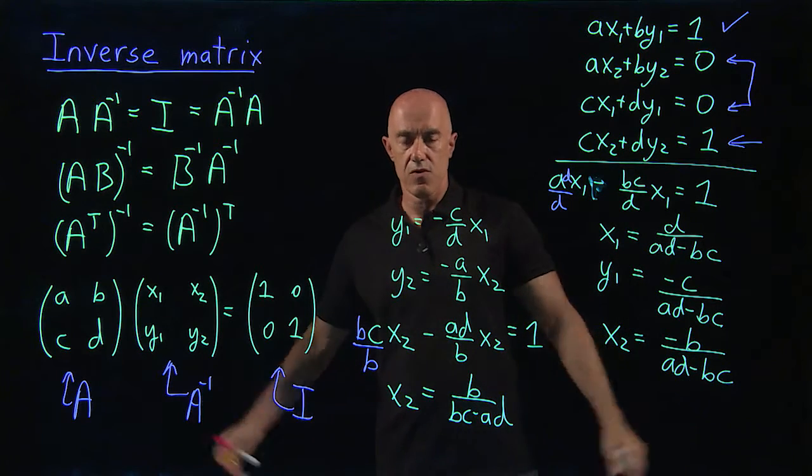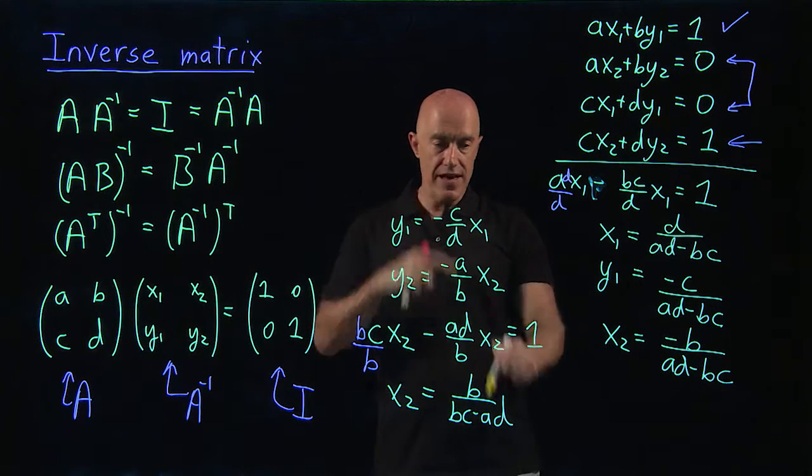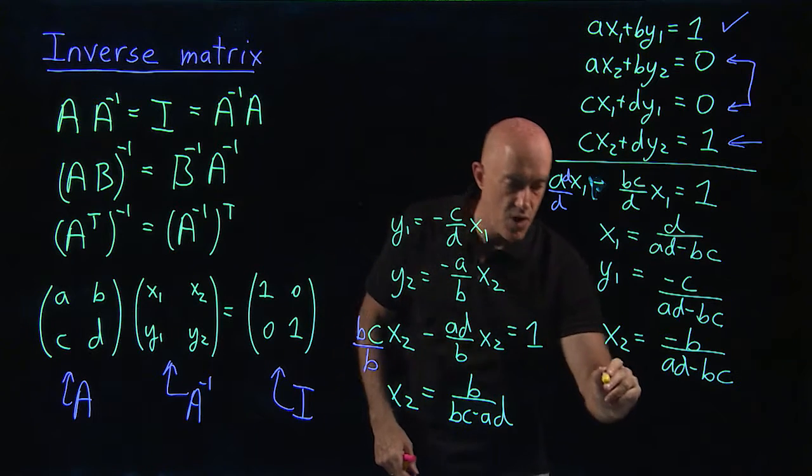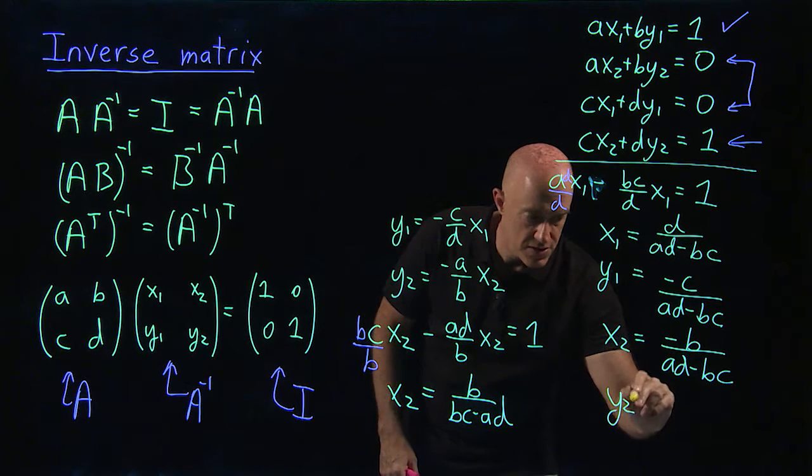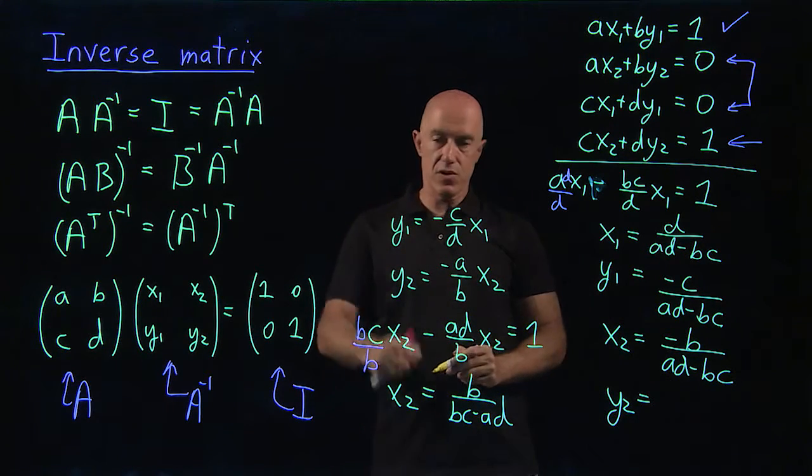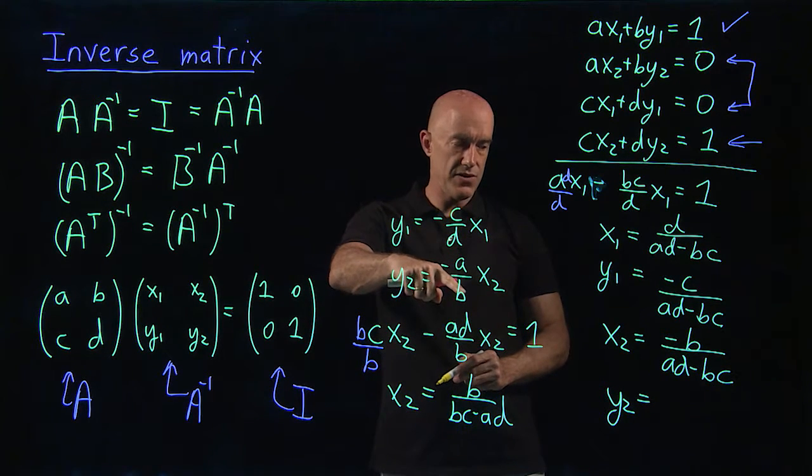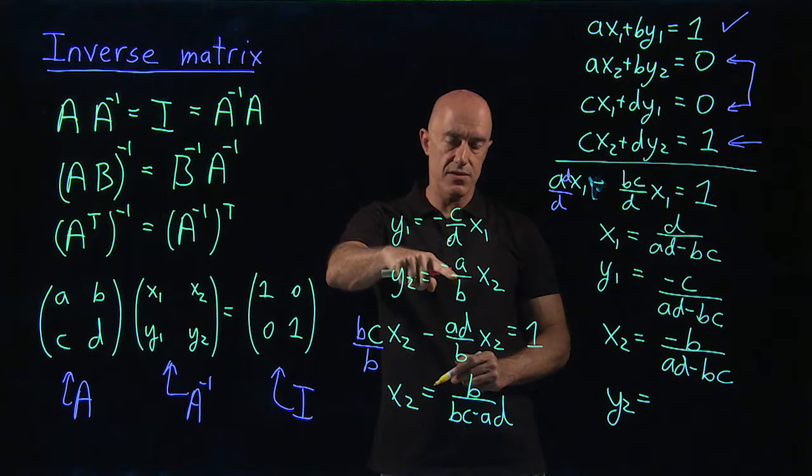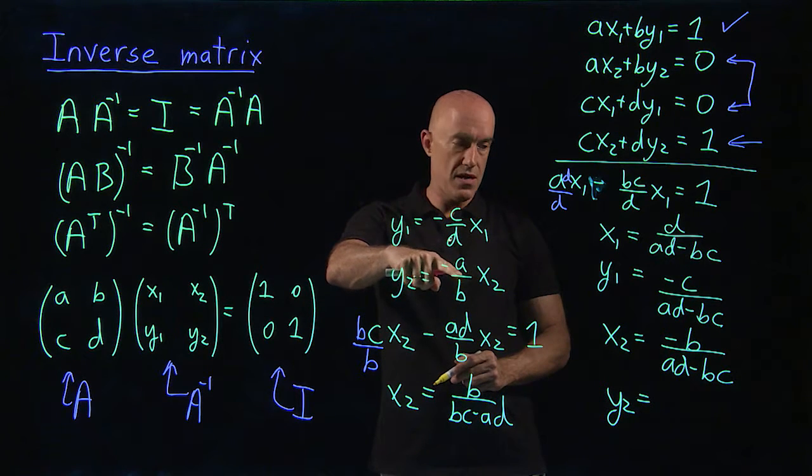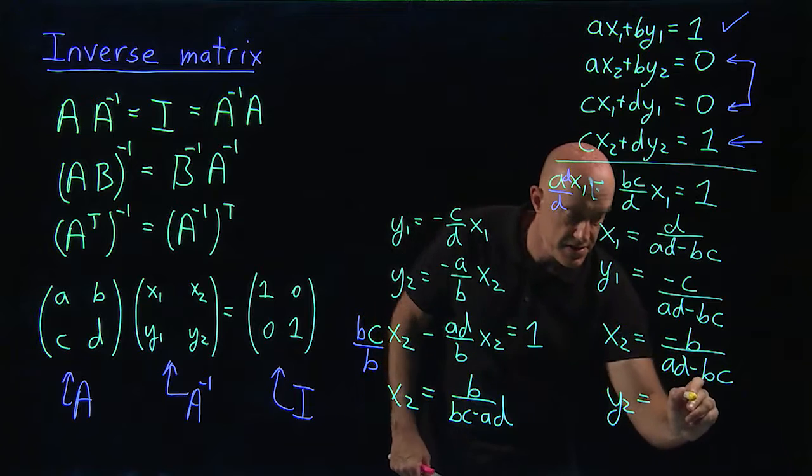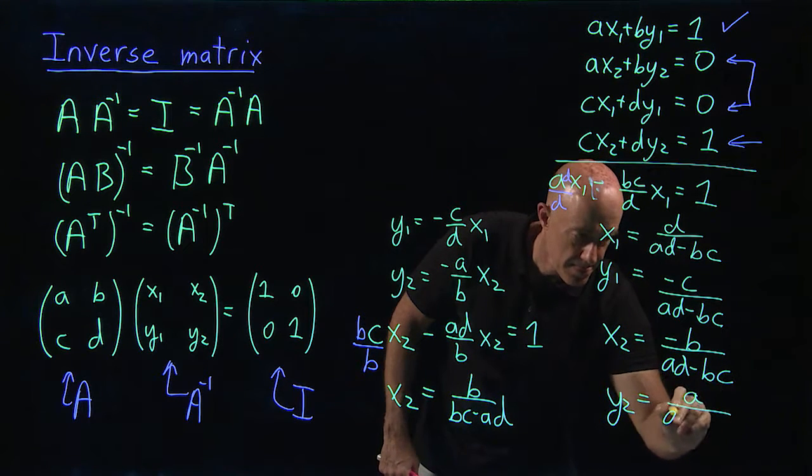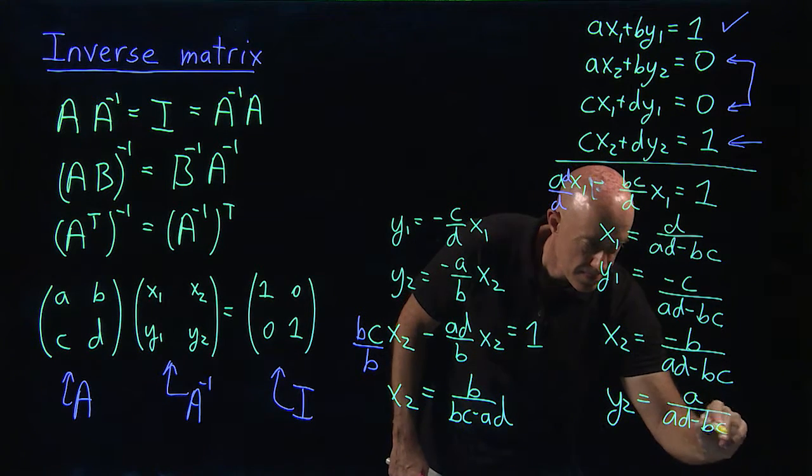We're almost done. We have x2. So now we just need y2. So y2 is equal to minus a over bx2. So the minus signs cancel. That becomes then a over ad minus bc.